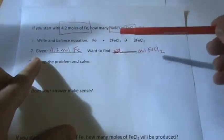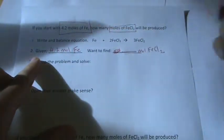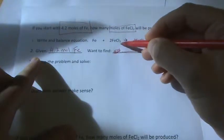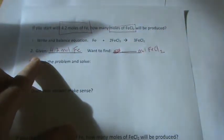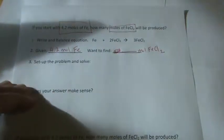And we have an equation. Here we know that 1 mole of Fe plus 2 moles of FeCl3 yields 3 moles of FeCl2. So that's balanced. Let's set the problem up.